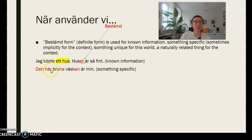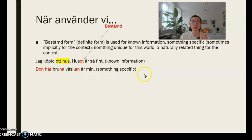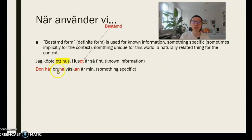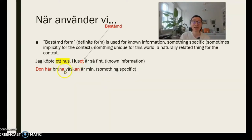'Den här bruna väskan är min.' — 'This brown bag is mine.' So here you're referring to something specific, pointing to something specific — den här bruna väskan. In Swedish you need to think about how 'brown' has to be altered into the definite form of the adjective, which ends with an 'a.' And the noun is also in bestämd form — the definite form of 'väska.' 'En väska' — 'väskan' means 'the bag.'